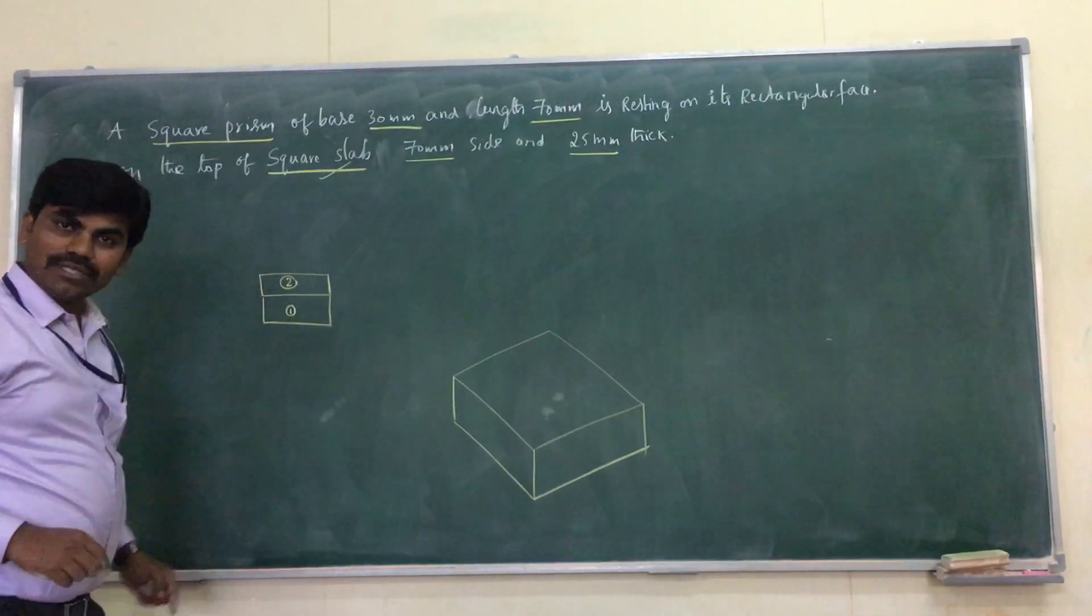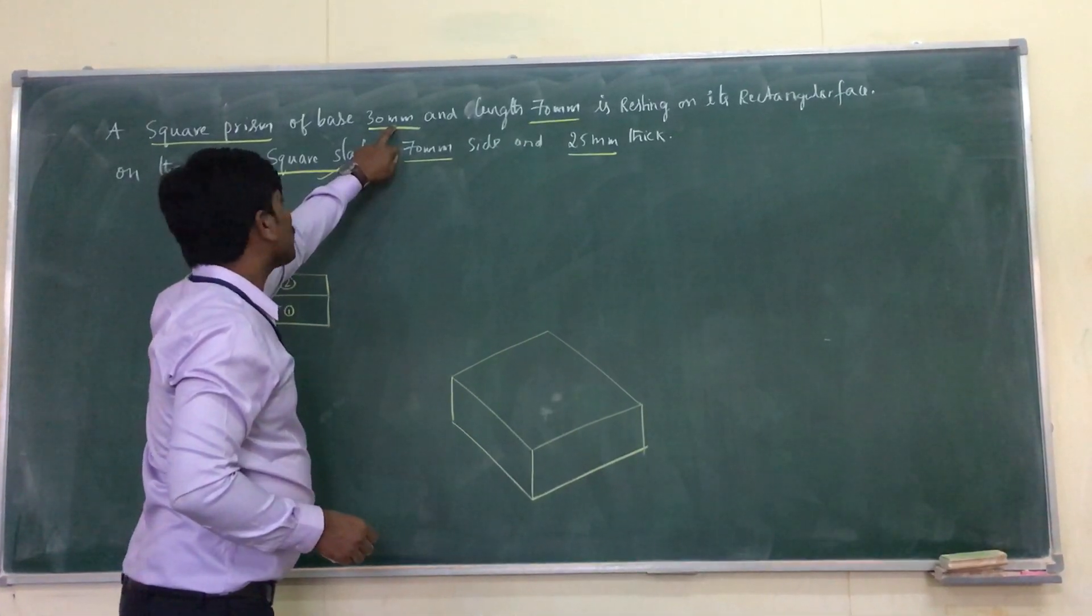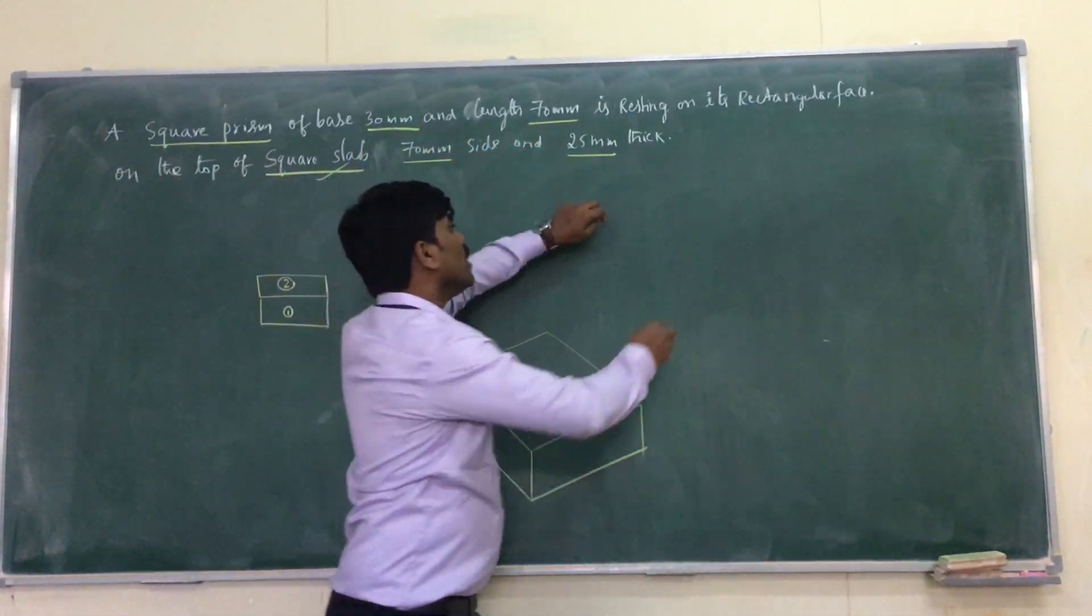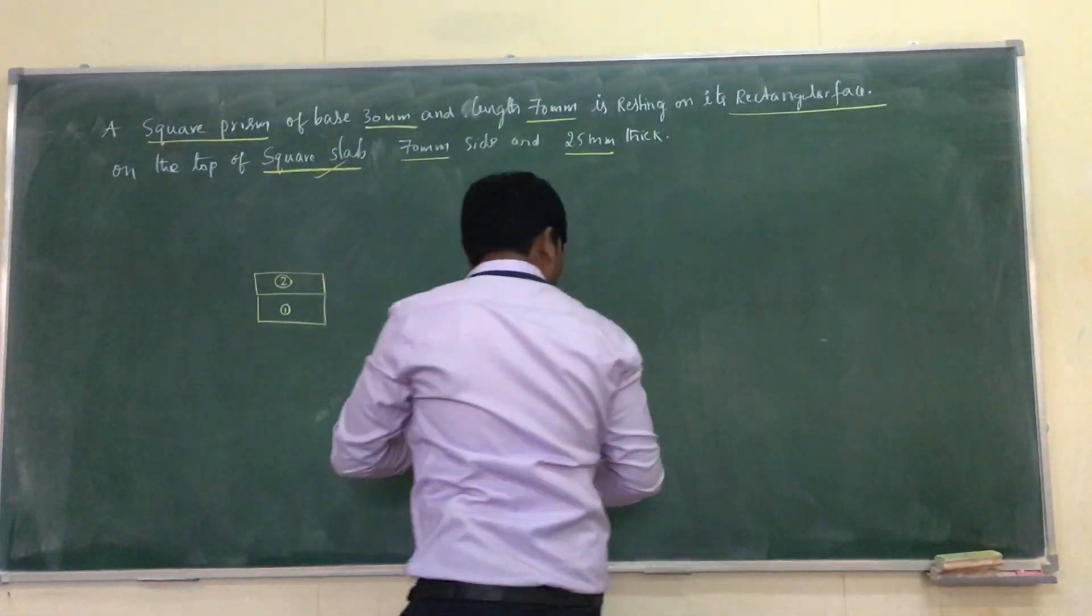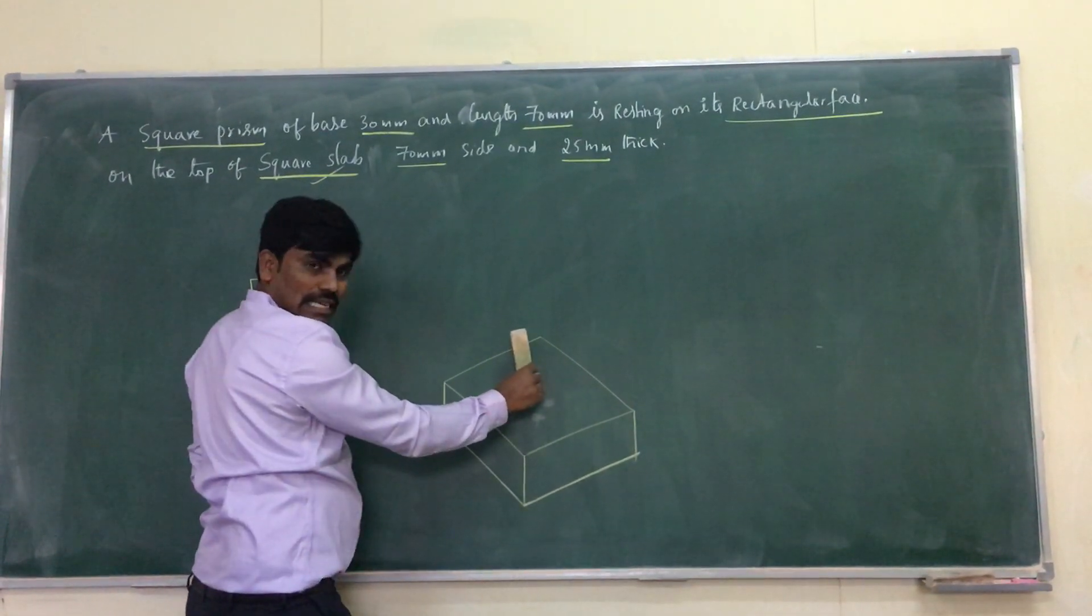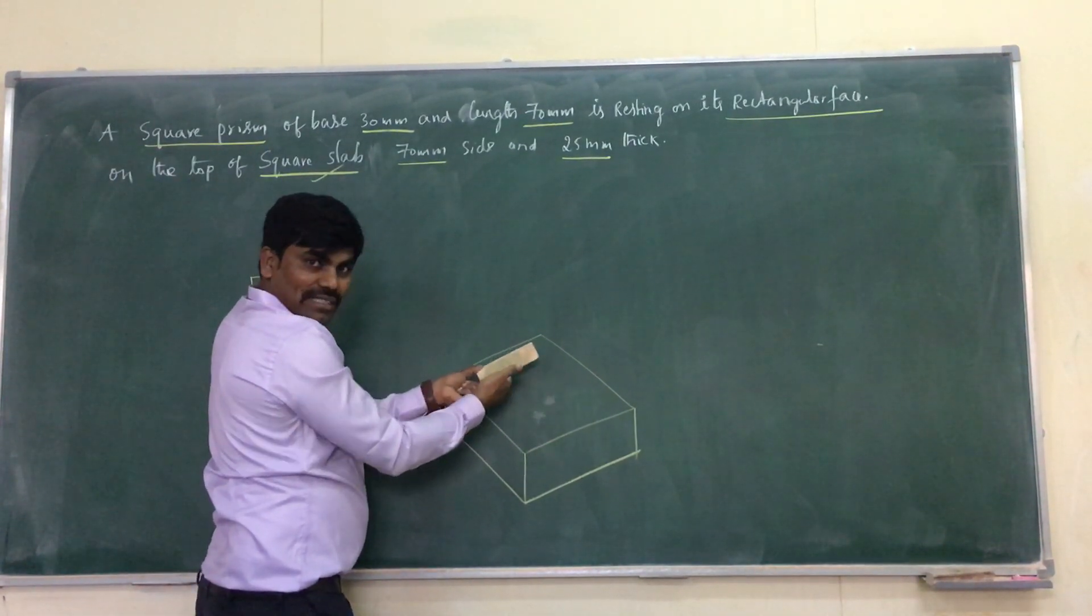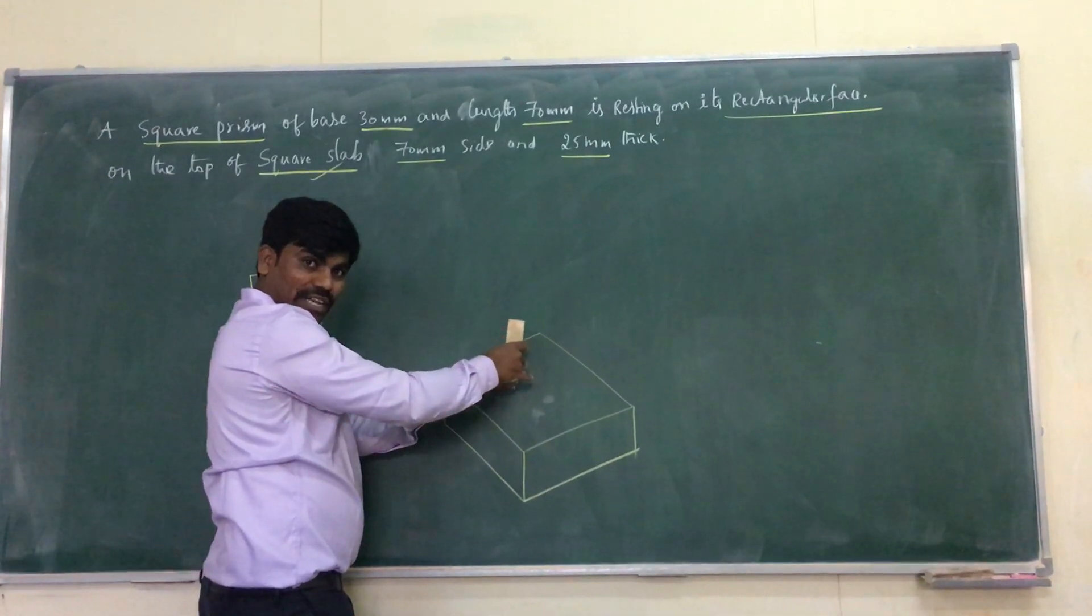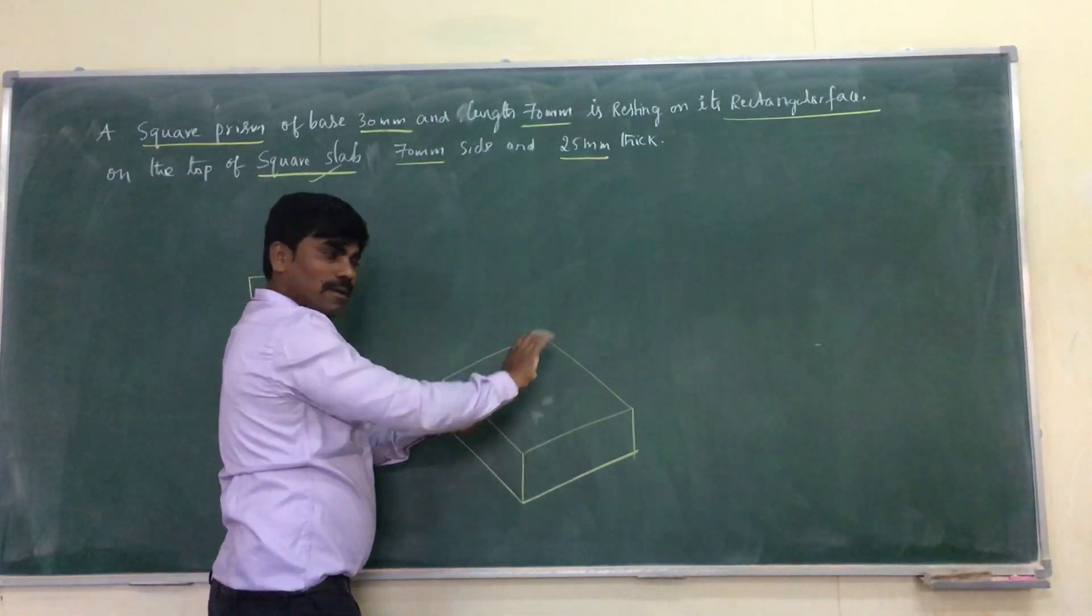Now you have to place a 30 square prism, base side, height 70 on a rectangular face. Very important - there are two ways to place it. I can place the prism vertically, or I can place the prism like this. It asks for a rectangular face, not a square face. You should be very careful, so don't place like this. Make it fall on the slab.